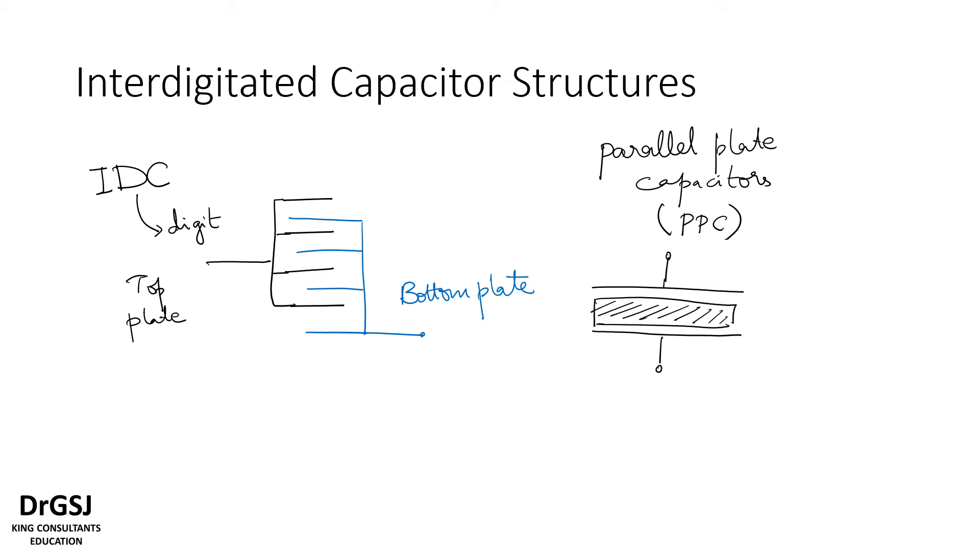Now if the dielectric is air, it is epsilon naught. If the dielectric is some other material, you will have an epsilon r, which is a relative material. So now the distance between these two is d and the area of the parallel plate capacitor.